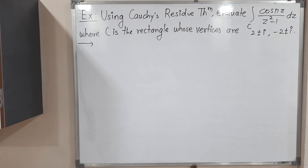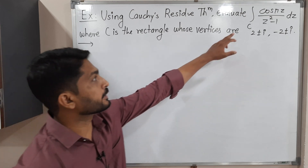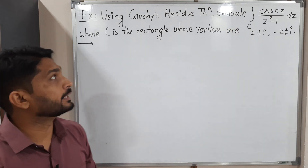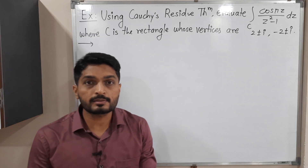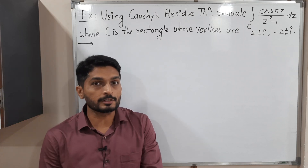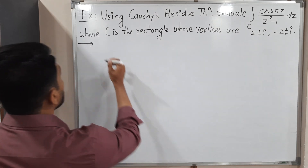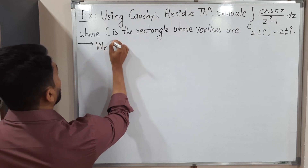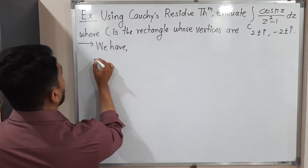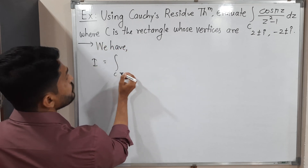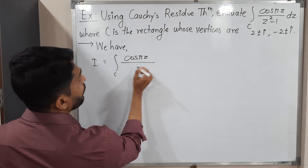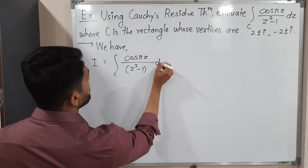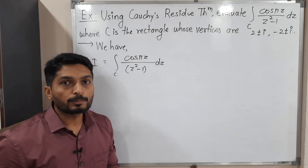Hi everyone. In this video we are going to discuss this example. We have this complex integration and we have to find its value with the help of Cauchy's residue theorem. Let us call this complex integration as I first, and then we will find its value. We have I is the integration over C of cos(πz) / (z² - 1) dz.